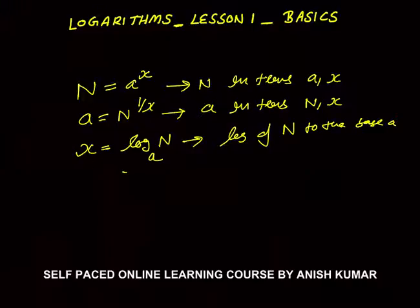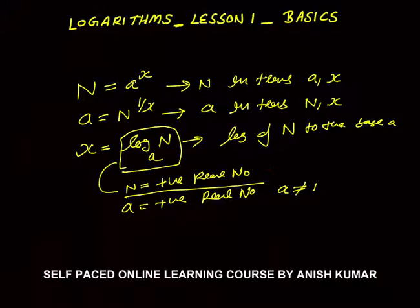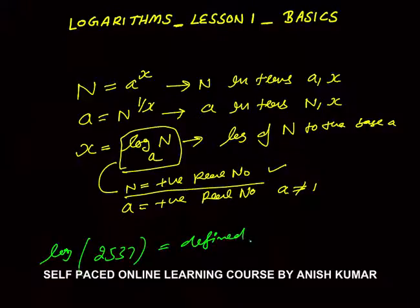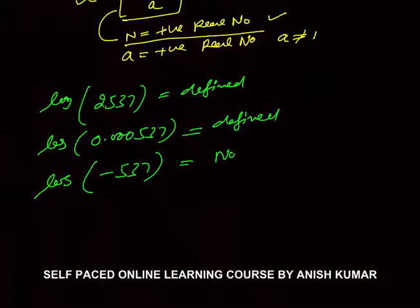Now, an important thing to understand is what n and a are. n is a positive real number — very important. a is also a positive real number, but a is not equal to 1. It means we can't get the value of log if the number is negative. For example, log(2537) is defined because the number is positive. Log(0.000537) is also defined. But log(-537) is not defined. Log is only defined for positive real numbers — the number can be a fraction or integer, but must be positive. The base a can be any positive real number except 1.